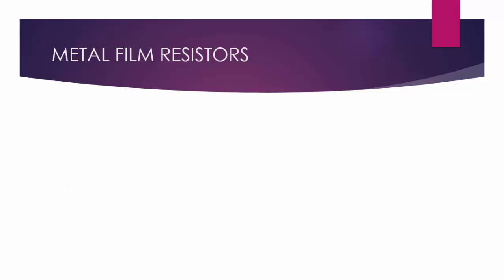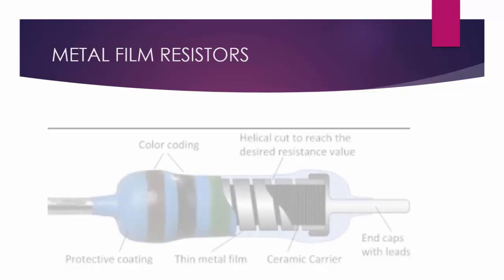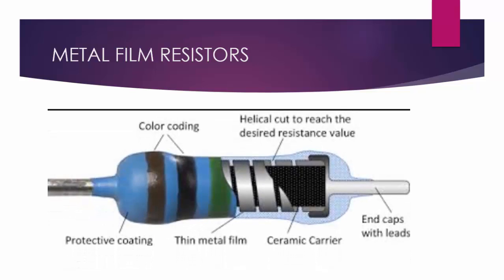Here is the diagram illustrating the metal film resistor. A thin metal film is on a ceramic carrier. It is similar to the carbon film resistor, except the coated film on the substrate is metal instead of carbon.